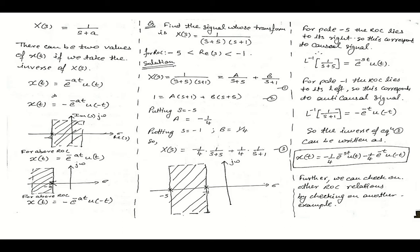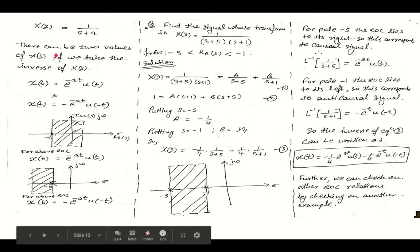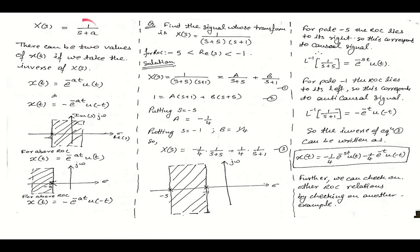The reason we have to take the ROC into consideration is that if we are given X(s) = 1/(s+a), this value of 1/(s+a) can arise from two signals. We can get 1/(s+a) either from x(t) = e^(-at)·u(t), or from the signal x(t) = -e^(-at)·u(-t), and still get a Laplace transform equal to 1/(s+a).